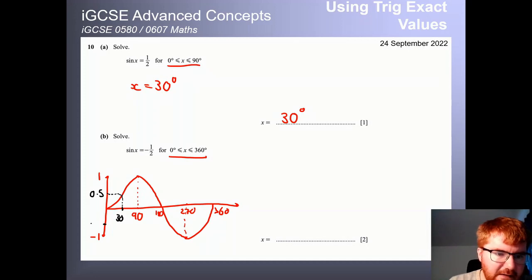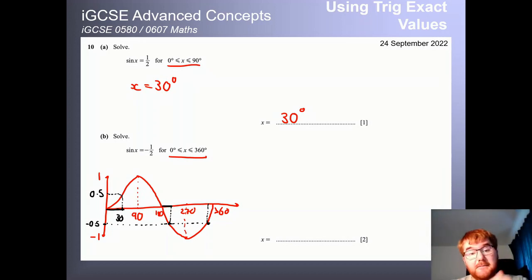Notice we want to work with minus 0.5. So if I go all the way across, notice it hits the graph here. And it hits the graph here as well. So if I go upwards there, and upwards there, and I can use this idea of symmetry, this gap here in black is 30 degrees. And that's equal to this gap here, because the graph is completely symmetrical.